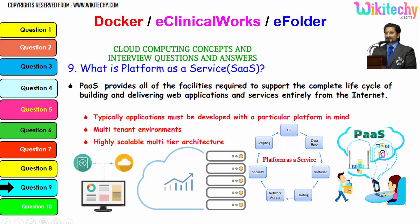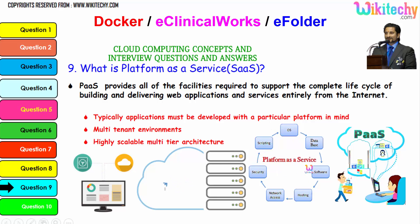PaaS means they give you a server with a particular operating system — you are renting an operating system. Whatever software you want, you can put it. You can also set up the database, finalize the OS, and configure the database, software, hosting, network access, security, and scripting. Everything is included in Platform as a Service.